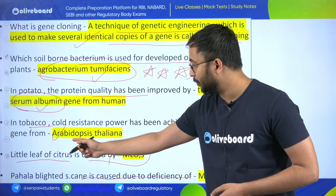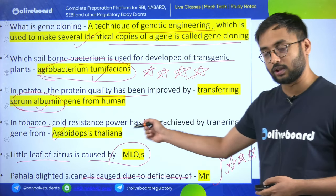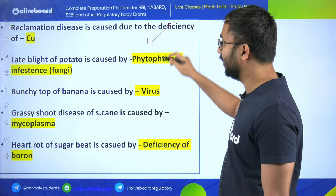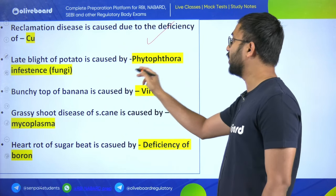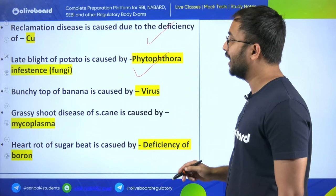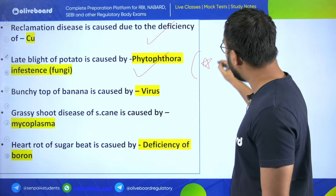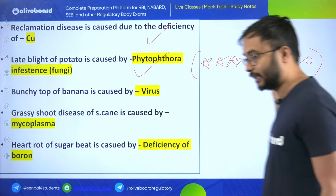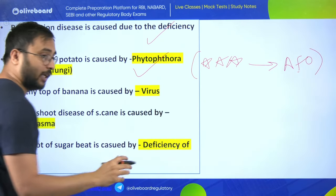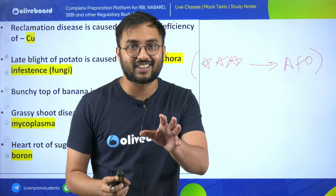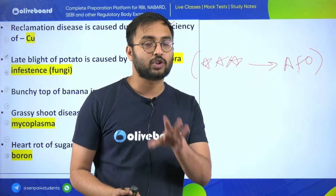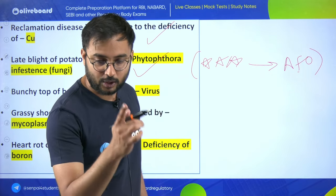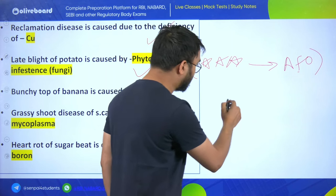Regarding protein quality addition in potato - serum albumin gene; cold resistance in tobacco - Arabidopsis thaliana; reclamation diseases are caused by deficiency of copper. Late blight of potato is caused by Phytophthora infestans - a three-star, star question and AFO previous year question of 2019. Write it down as very important.